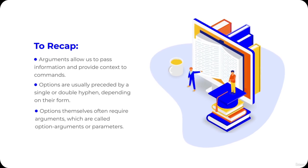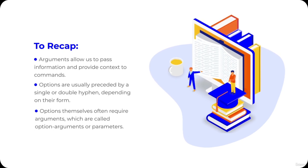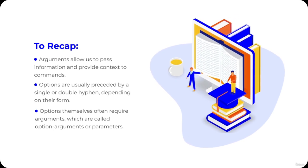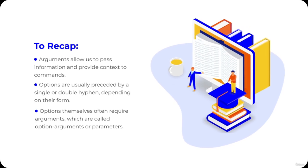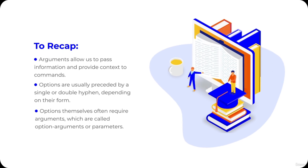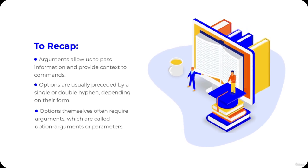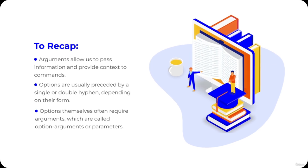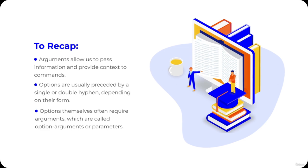Here's a recap: Arguments allow us to pass information and provide context to commands — some commands require them, while others do not. Options can also be used to modify the behavior of a command, but unlike arguments, they're usually preceded by a single or double hyphen depending on their form. Options themselves often require arguments, which are called option arguments or parameters.